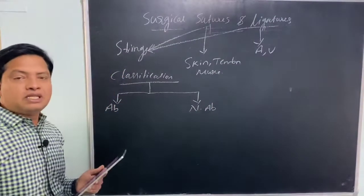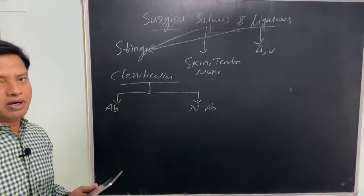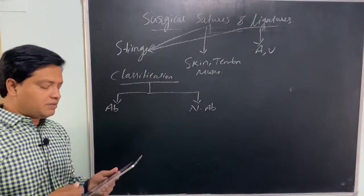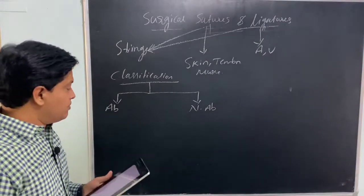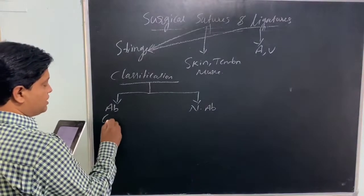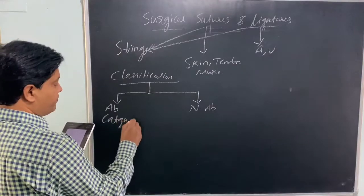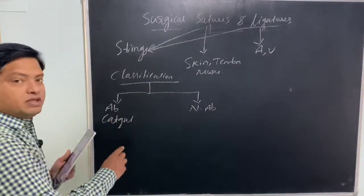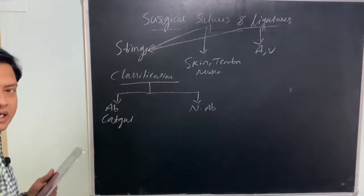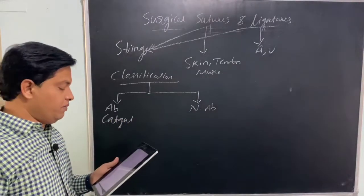Absorbable means it will get digested and absorbed into the body. The best example for an absorbable suture is catgut. We will see more about catgut in the coming video.